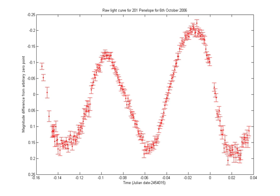The light is usually in a particular frequency interval or band. Light curves can be periodic, as in the case of eclipsing binaries, Cepheid variables, other periodic variables, and transiting extrasolar planets.